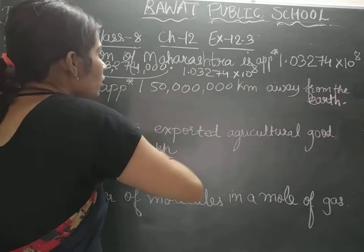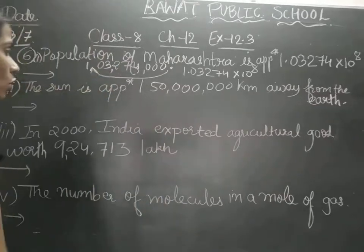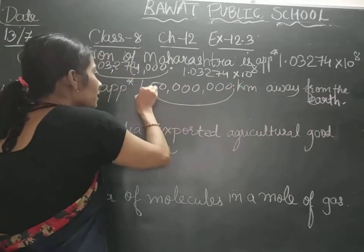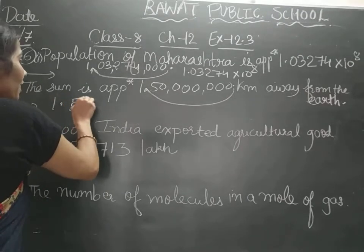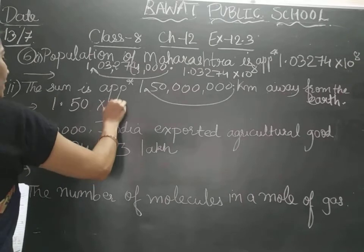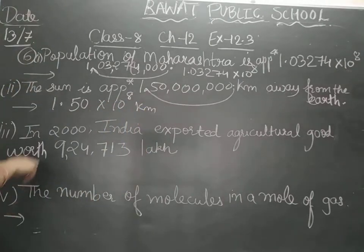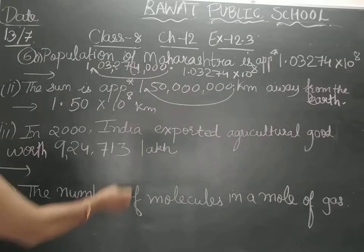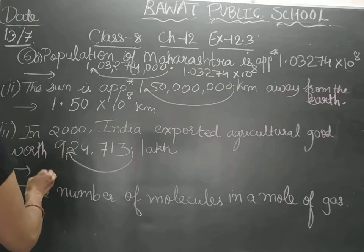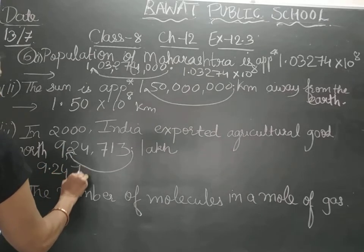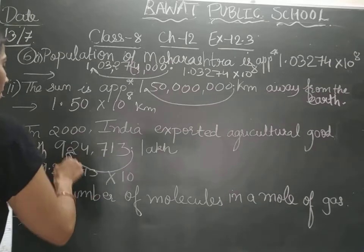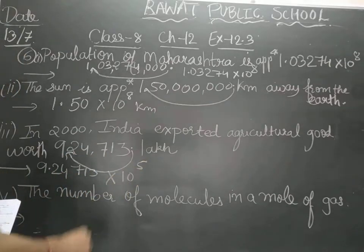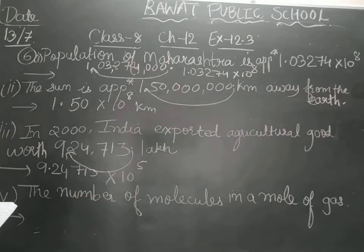The sun is approximately 1,50,000,000 kilometers away. We have to place the decimal and shift it after the first digit. How many numbers in between? 1, 2, 3, 4, 5, 6, 7, 8 — so it will be 1.5 into 10 raised to 8 kilometers. Next, in 2000, India exported agricultural goods worth rupees 9,24,713 lakhs. Consider the decimal here and bring it after 9. So it will be 9.24713 into 10 raised to 5 lakhs, because there are 5 digits in between.